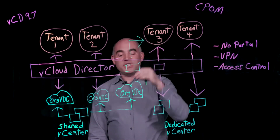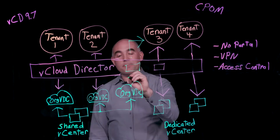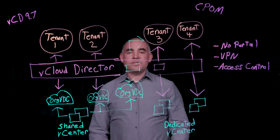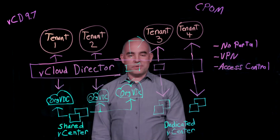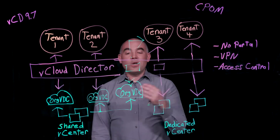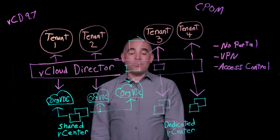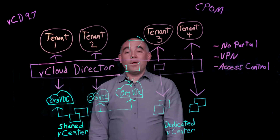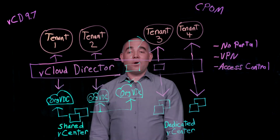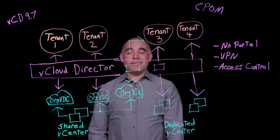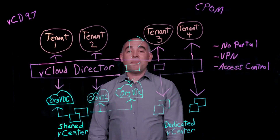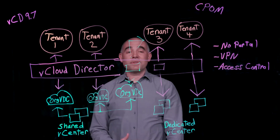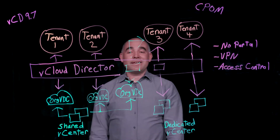The shared vCenter might host less critical applications while the dedicated vCenter hosts more mission-critical ones, allowing tenants to consume two different tiers of cloud resources at two different price points. In our next video, we'll talk about how VCD's Centralized Point of Management can be utilized as an API endpoint for cloud service providers to manage their vSphere estate.